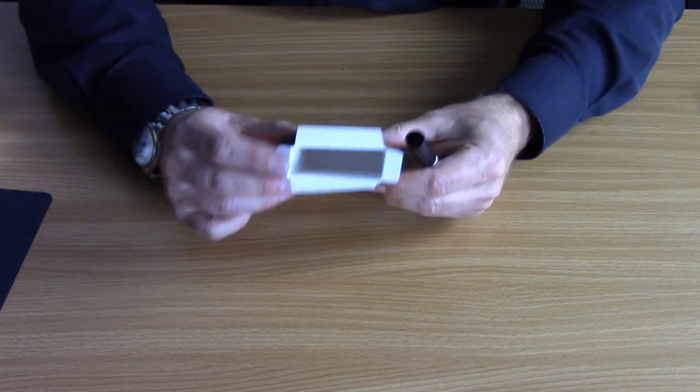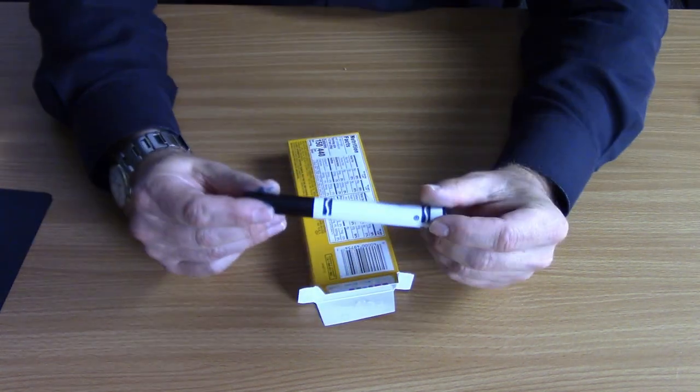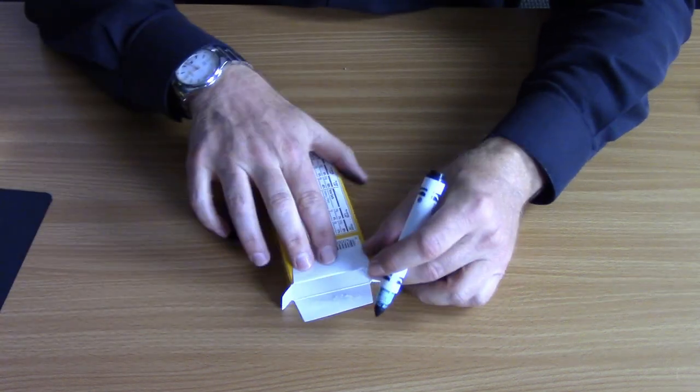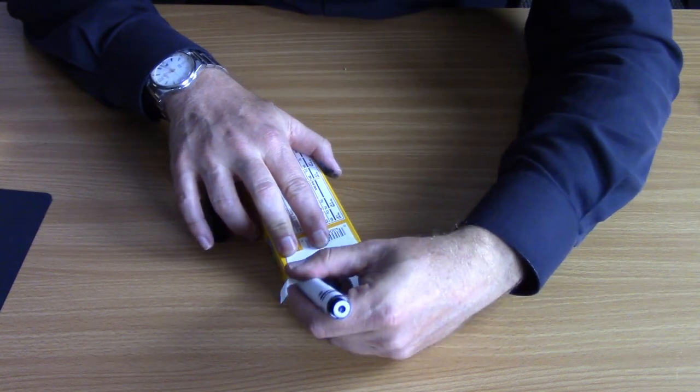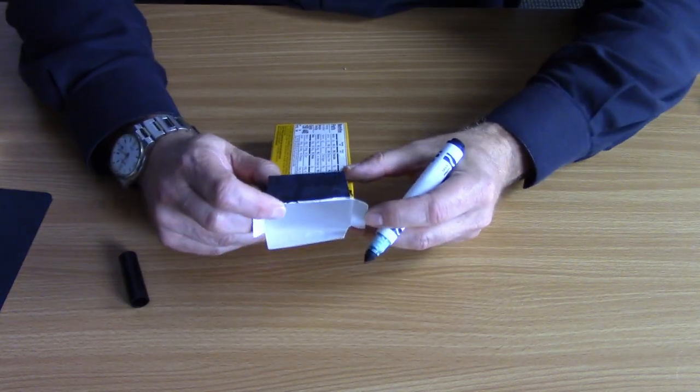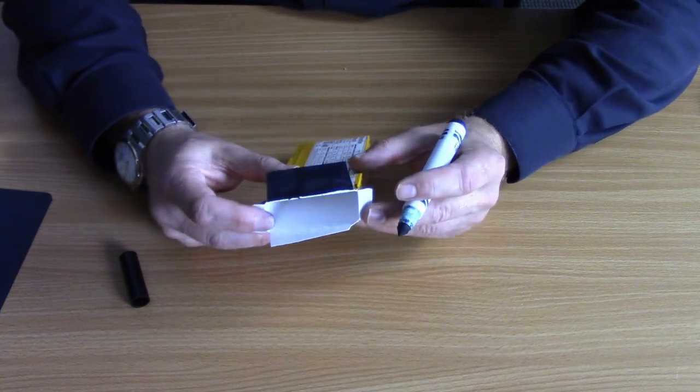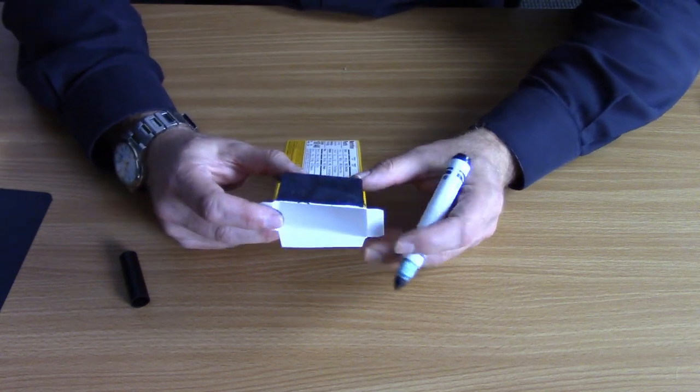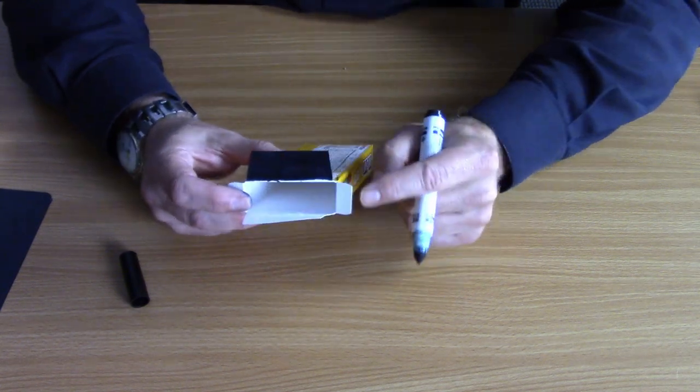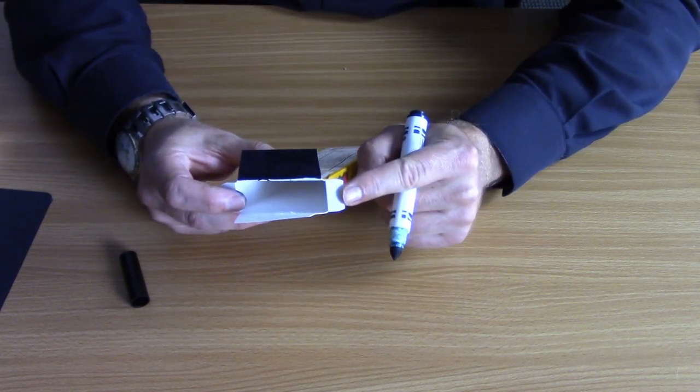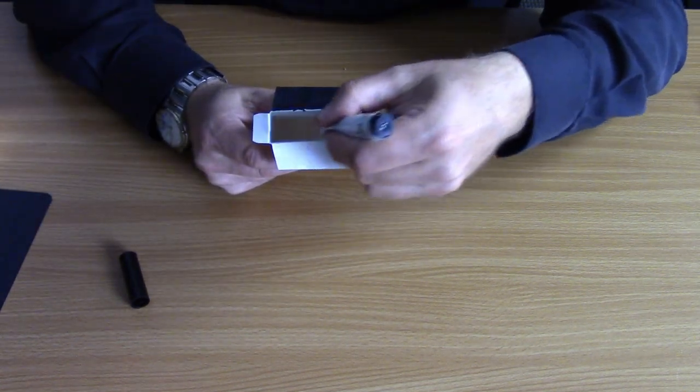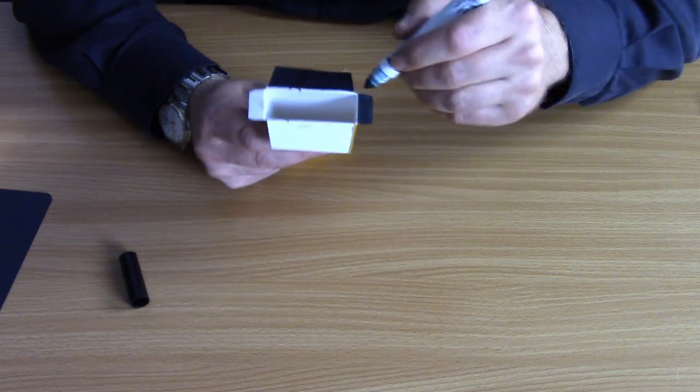The first thing we're going to do is we're going to take our felt tip pen, if you're doing this, and I'm going to go ahead and darken one of the side flaps with the felt tip pen like this. It doesn't have to be perfect, but this will help us see the spectrum that is projected against the end of the box. We also want to darken one of the end tabs. Now I'm going to darken a band around the top inside of the box.